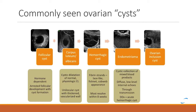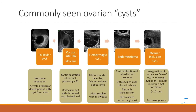The endometrioma is a cystic collection of mixed blood products and is very characteristically described as having diffuse low-level internal echoes. As you can see throughout this cyst, it has a ground-glass appearance and does have through transmission. Sometimes there is overlap between a hemorrhagic cyst and an endometrioma.